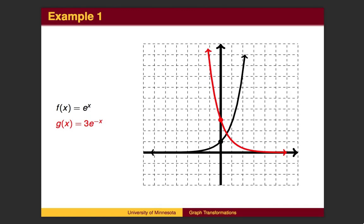The negative sign is on the x, so the graph will be flipped left to right, so that the asymptote now points toward the positive side of the x-axis. The graph is also 3 times taller, so the point at 0,1 is now stretched to 0,3.